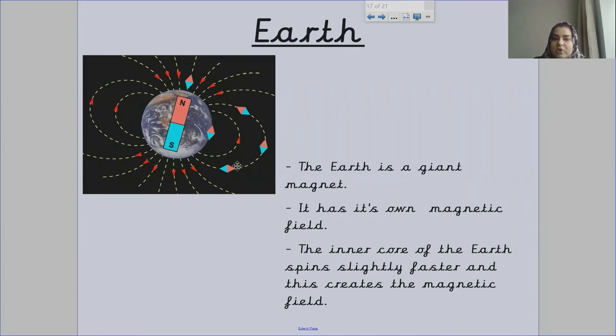It has its own magnetic field. Earth has its own magnetic field, which comes out of the north side and goes in the south side.